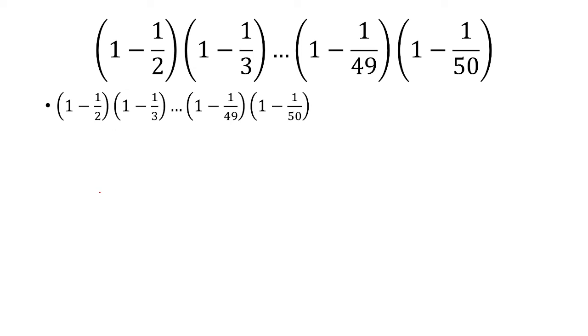Now, another way to do this is to rewrite this in terms of factorials. So if we just look at the top, if we multiply 49 by 48 by 47, all the way down to 1, that's the same thing as 49 factorial.